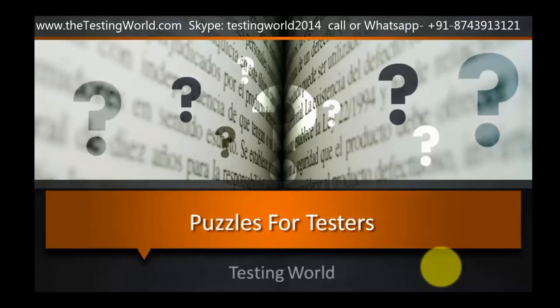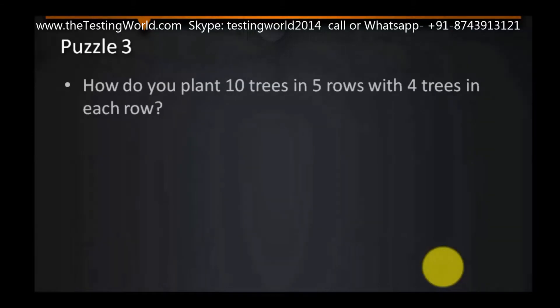Welcome to the series of puzzles for testers. This is puzzle 3. The puzzle is: how do we plant 10 trees in 5 rows with 4 trees in each row?